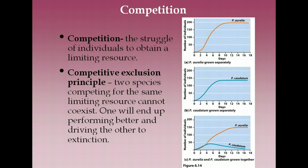One of the factors determining species distribution is interactions with other species — that's community ecology. There are four categories: competition, predation, mutualism, and commensalism. Competition is the struggle of individuals to obtain a limiting resource. In the Paramecium experiment by Georgie Gauss, populations of paramecium would explode, slow down, stop, and then individuals would die — what he was observing was them reaching their carrying capacity, demonstrating logistic growth.